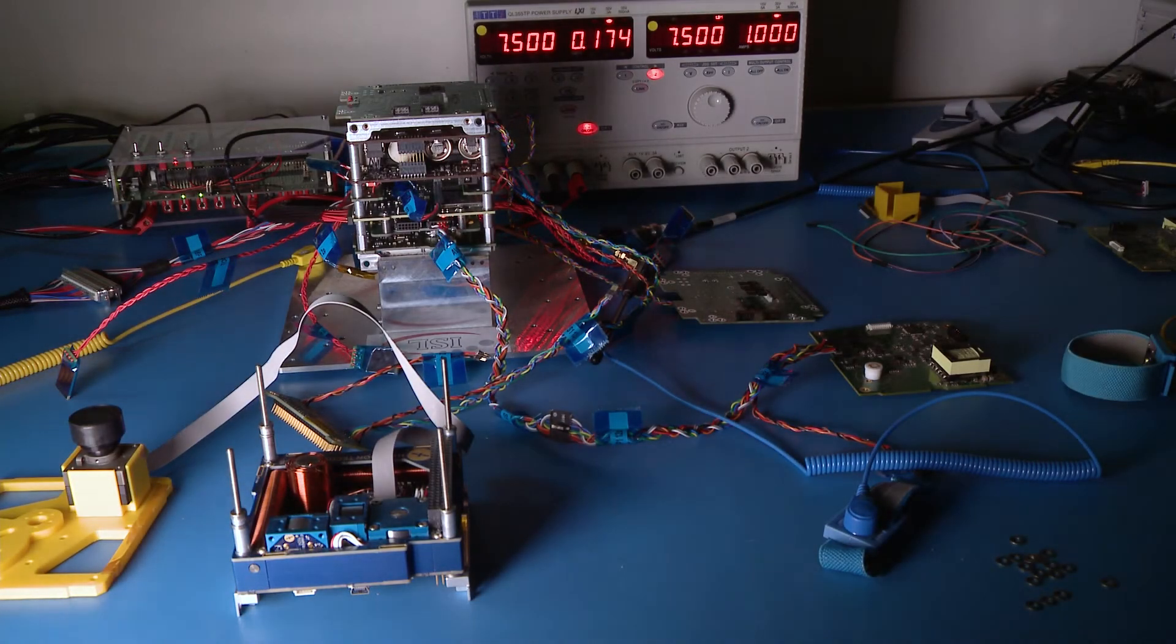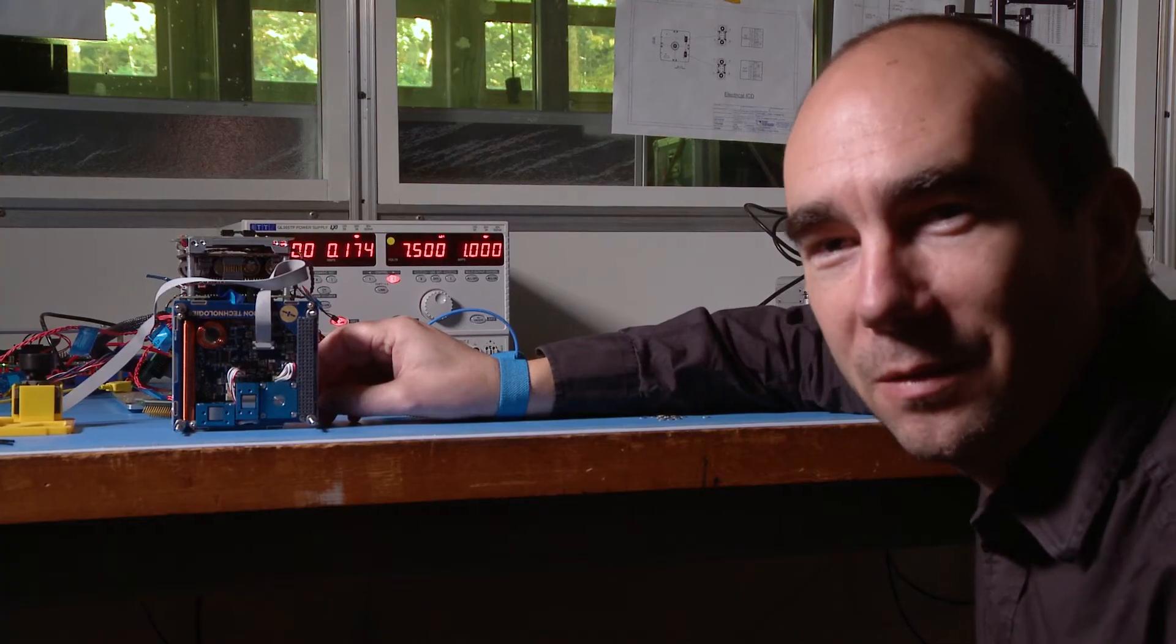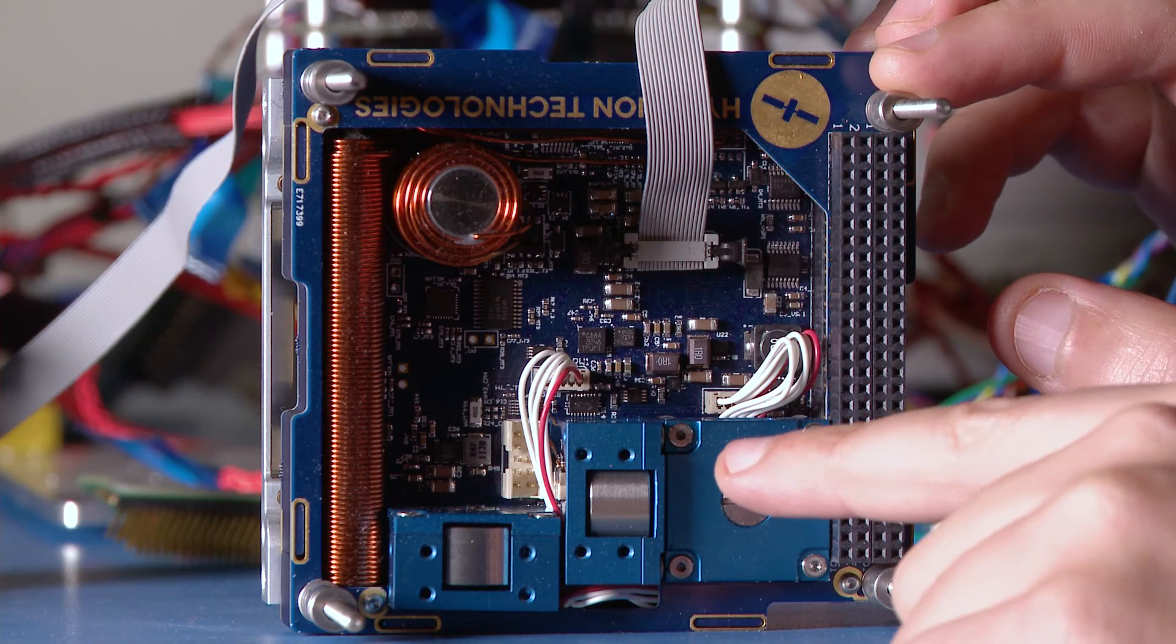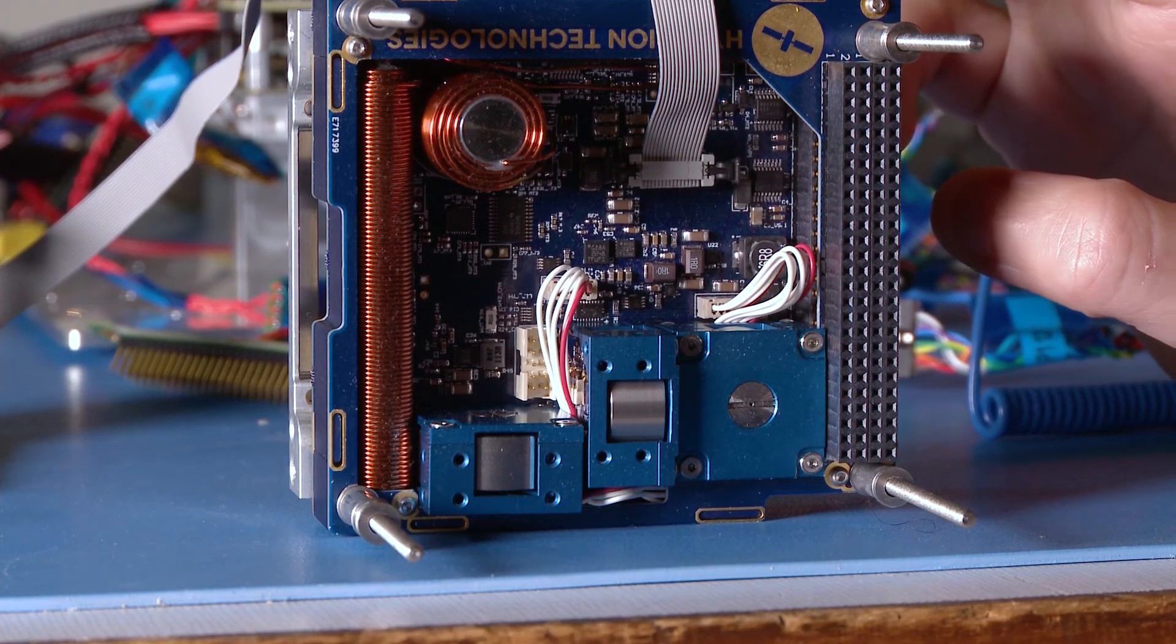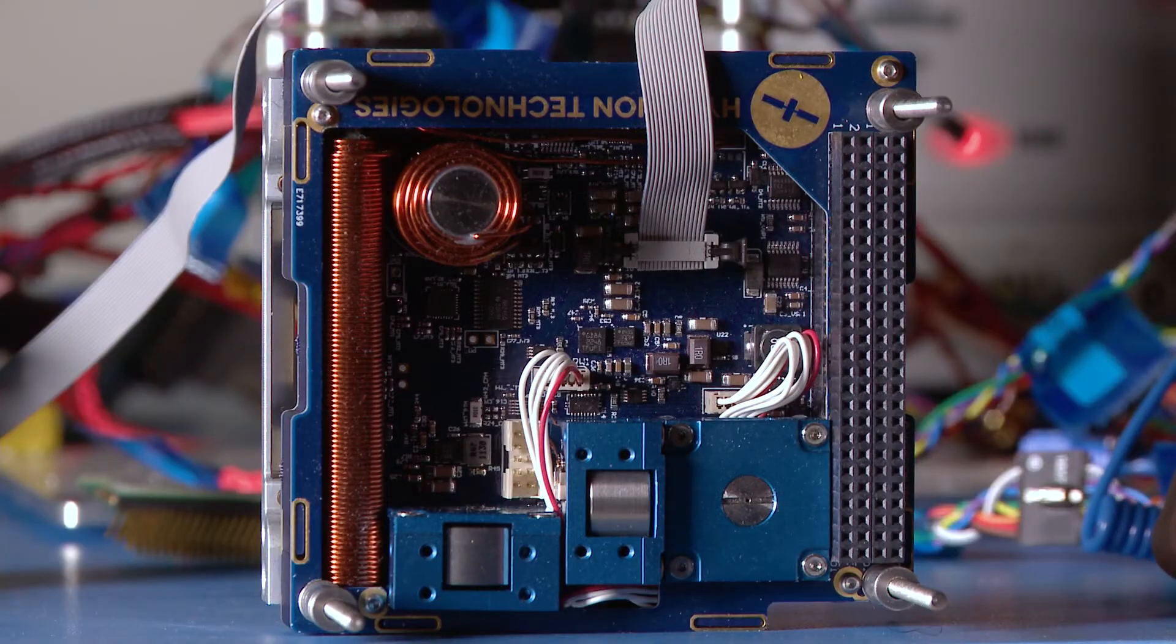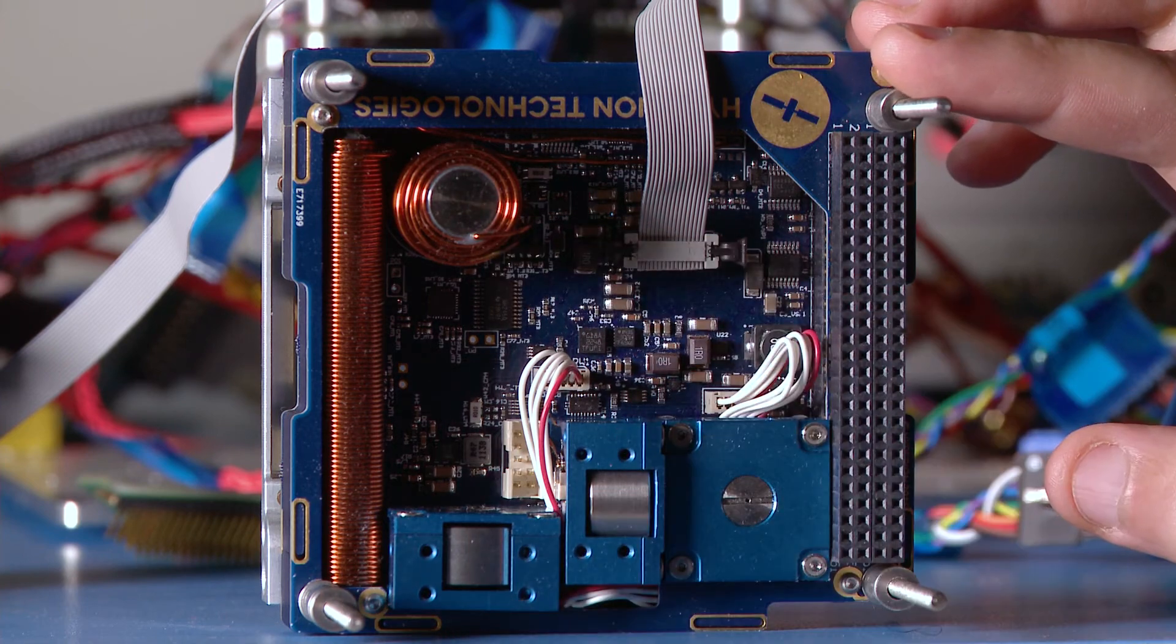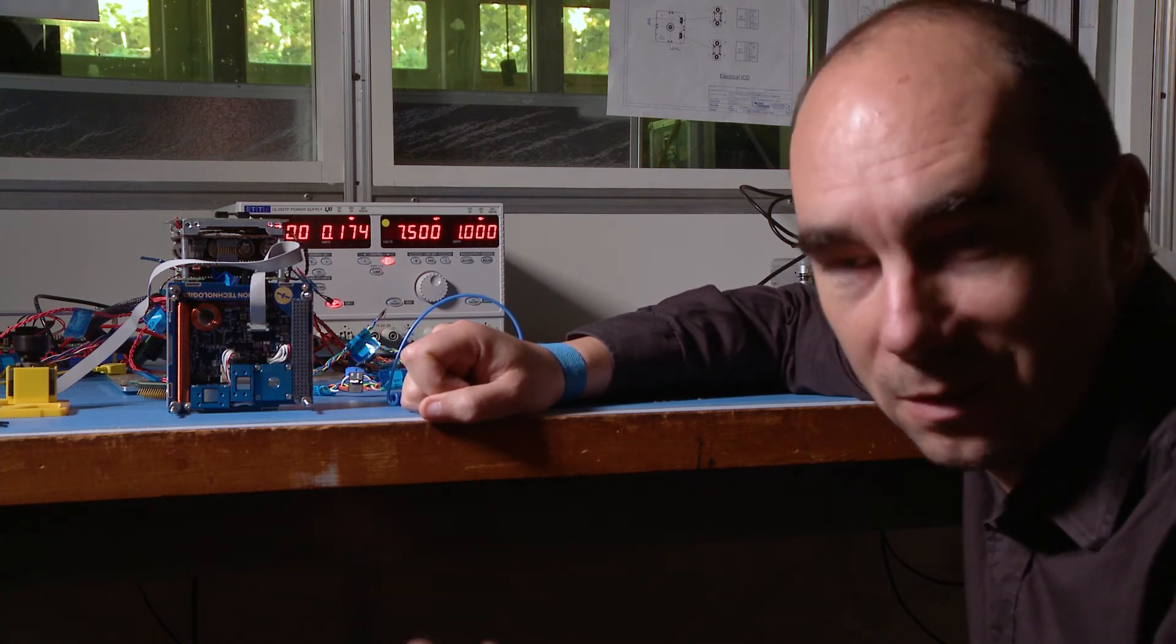This small part here is everything related to the pointing of the satellite, what we call the attitude control of the satellite. So here you see the reaction wheels, they are very small but they can rotate very fast, and by rotating they will move the satellite in one direction or the other. And here you have what we call the magnetotorquer, which are used to align the satellite and the gravitational field to know where it is and where it's pointing.